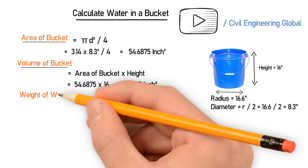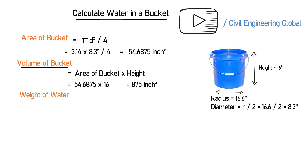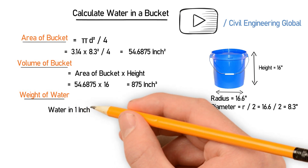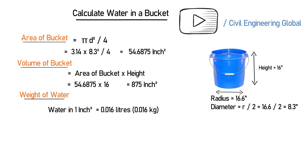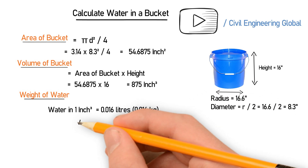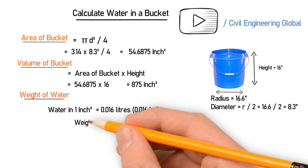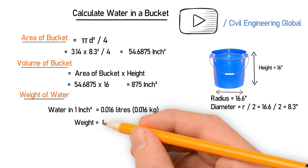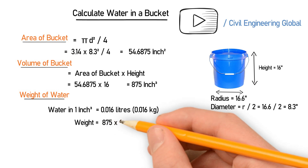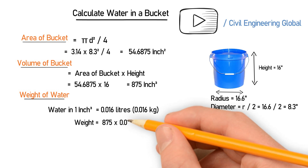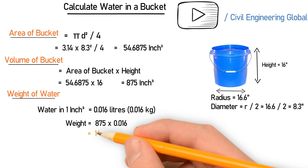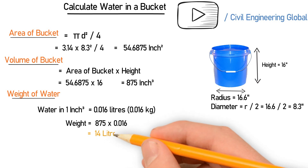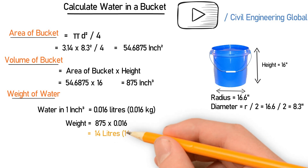After finding the volume, we have to find the weight of water in kilograms and in liters. Water in one cubic inch is equal to 0.016 liters, which is also equal to 0.016 kilograms. So the weight of water in our bucket in liters will be 875 multiplied by 0.016, which gives us 14 liters, or you can also say 14 kilograms.